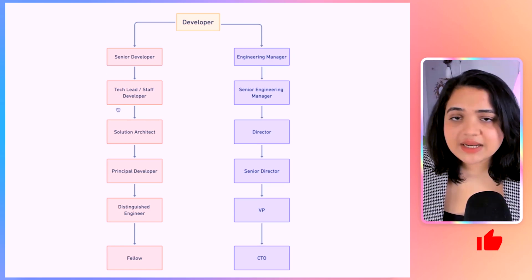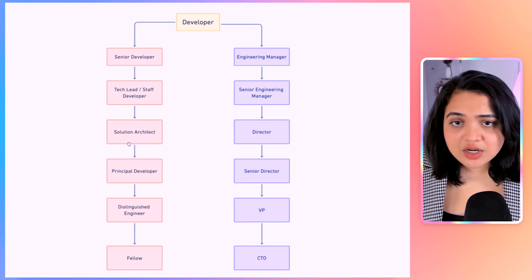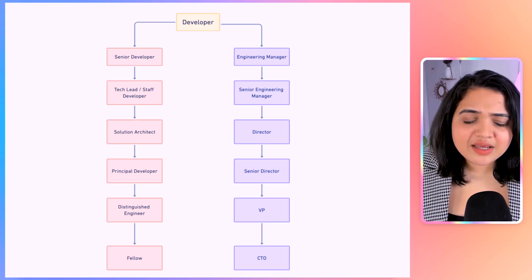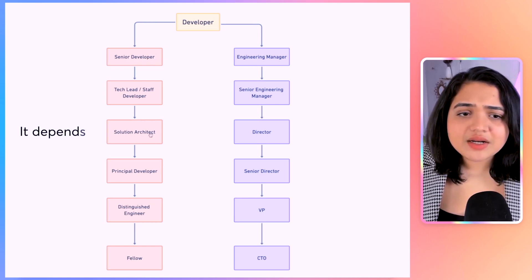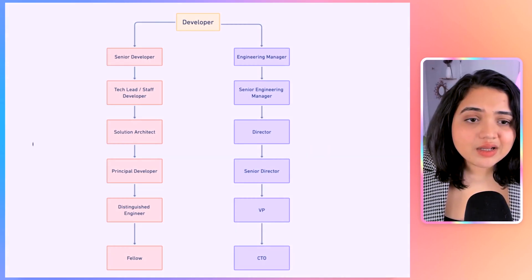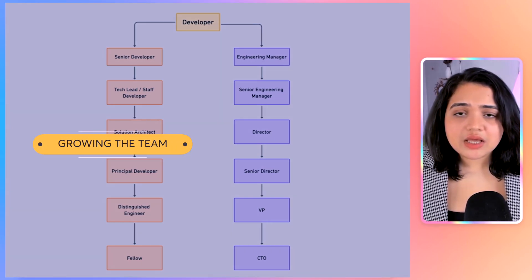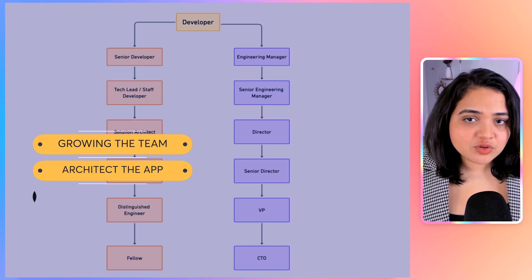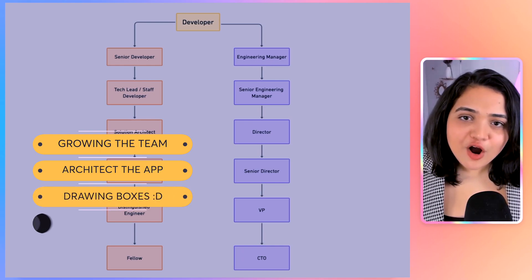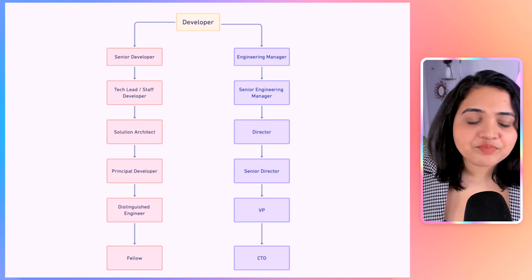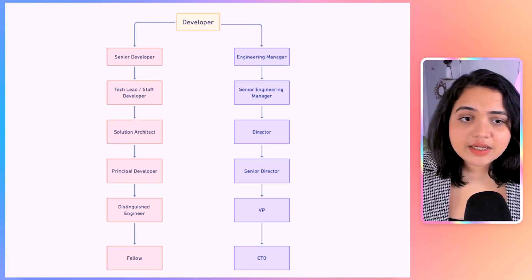Once you become a senior developer, two paths open up. On the IC path, you can become a technical lead or staff developer, and after that a solution architect. An architect is mainly responsible for architecting different apps, growing the team, and looking at the company's architecture holistically to recommend best practices. You may have heard the joke that an architect draws a lot of boxes — which isn't wrong — but an architect does a lot more, thinking about the company's technical architecture holistically.